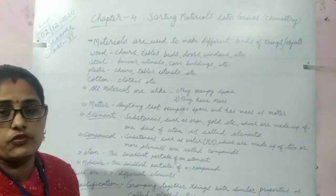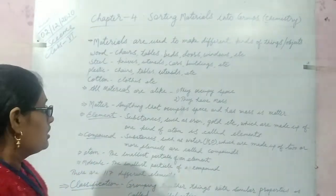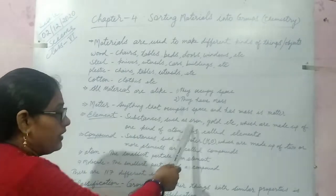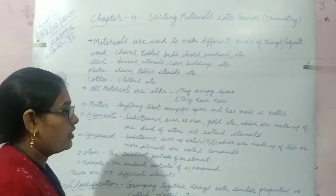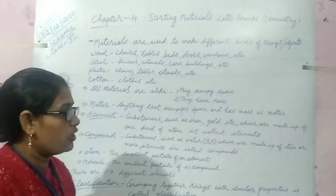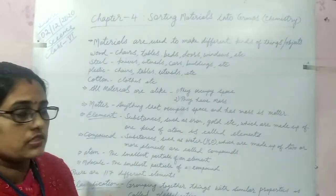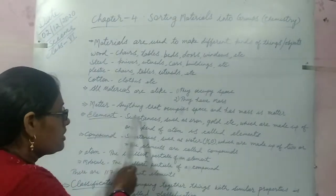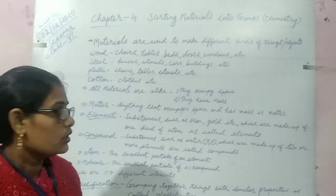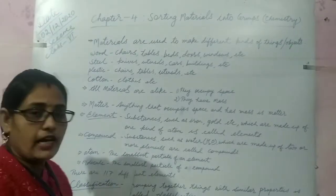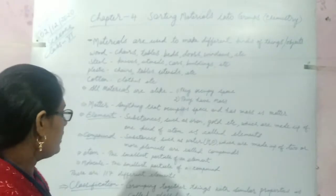Elements. It is a very new term for you all. Elements. It is a substance like iron, gold etc. which are made up of one kind of atom is called elements. Once again I am repeating. Elements. Substances like iron, gold etc. which is made up of one kind of atom is known as elements.